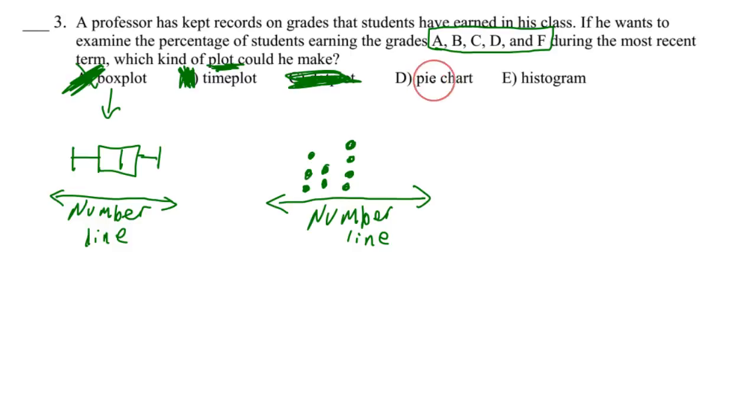So now we're left with pie charts and histograms. A pie chart is where you have your circle, it gets cut up into different segments, and then you report out on what the different percentages are. That might work for this,